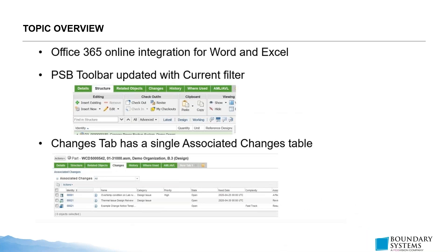Office 365 online integration is available in Windchill 12, but at this stage it only supports Excel. This integration gives you the Windchill toolbar from within Microsoft Office online applications, allowing you to check out, check in, and create new Windchill documents from within Excel online. For installed versions of Microsoft Office, the integrations are still available for download, so you can still integrate your MS Office package with Windchill using those add-in integrations.